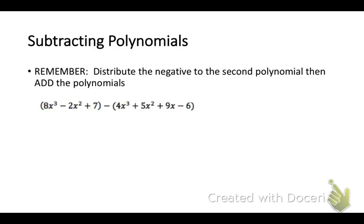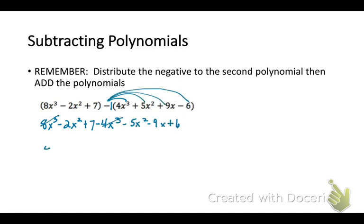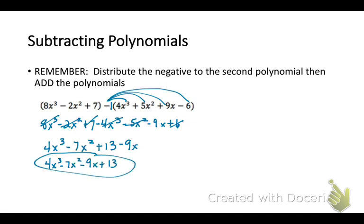Now let's look at subtracting polynomials. Remember, you're going to distribute the negative to the second polynomial and then add them. Rewrite your first polynomial and then put a negative 1 there and distribute it — all the signs will change. Now combine like terms. Notice I'm combining my x cubed terms, looking at the sign directly in front of my term to know whether I should add or subtract. Finally, rearrange your terms so they are in standard form.